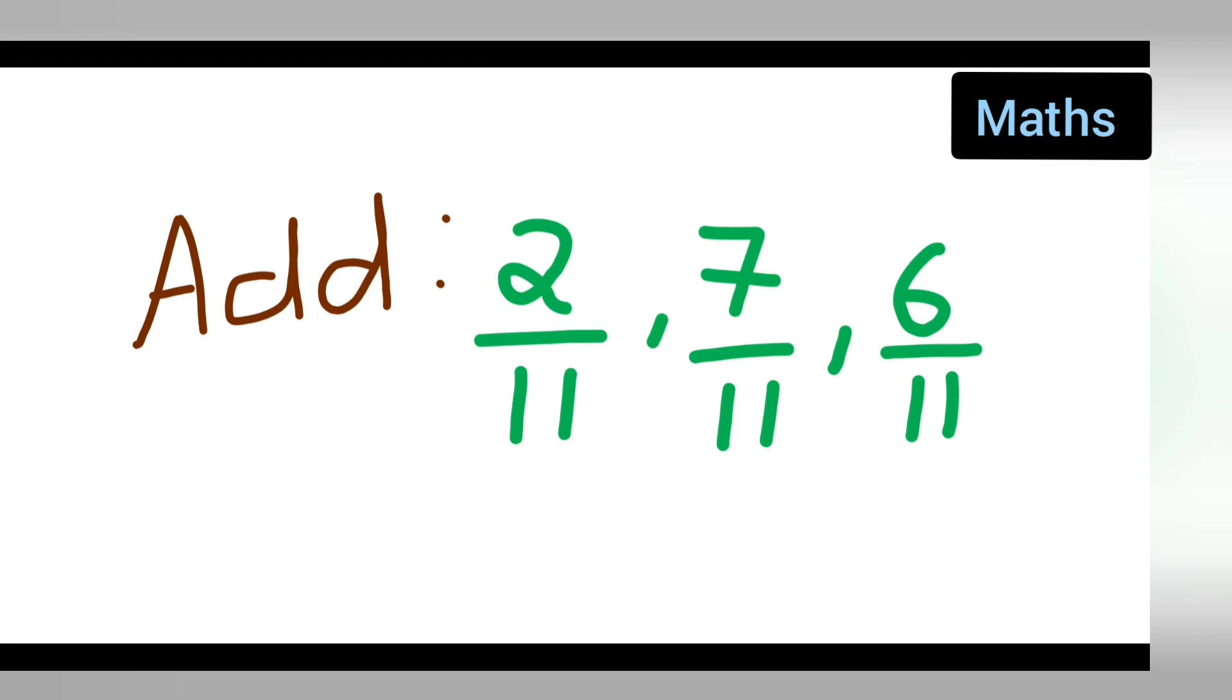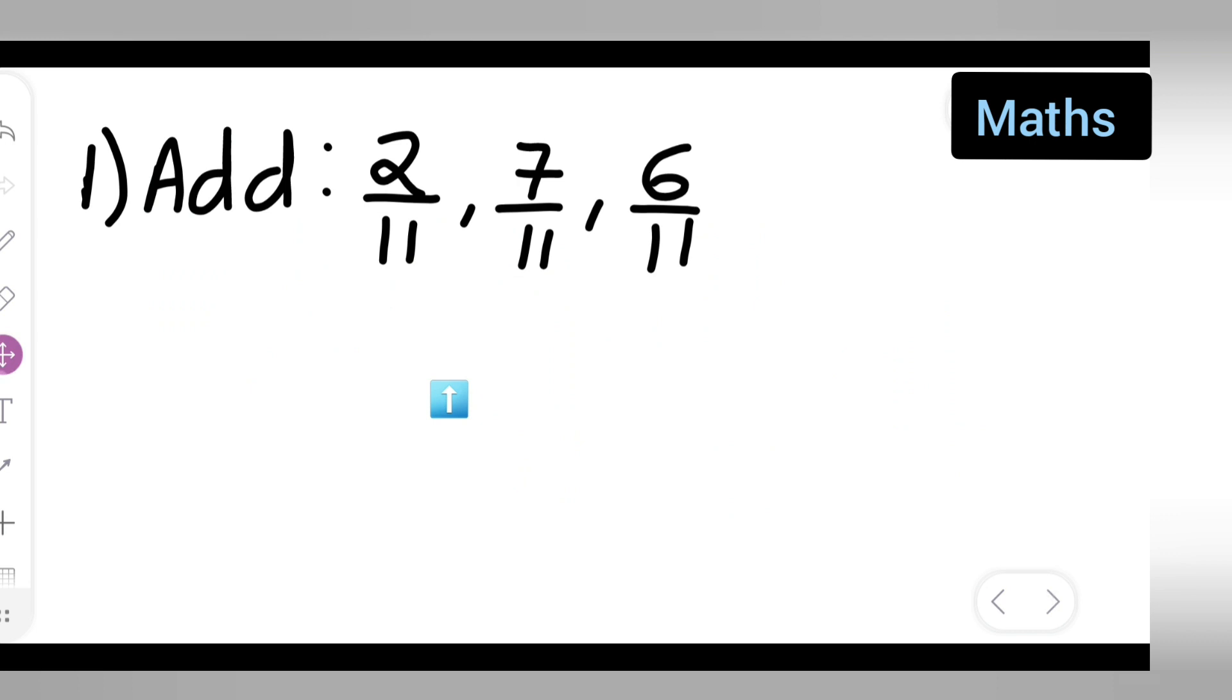Welcome to today's mathematics class. The question is taken from class 7 mathematics. The question is: add 2/11, 7/11, 6/11. First, take down the question. Here you can see the denominator is the same. We need to add these numbers, right? So first thing we're going to do is write down 2/11